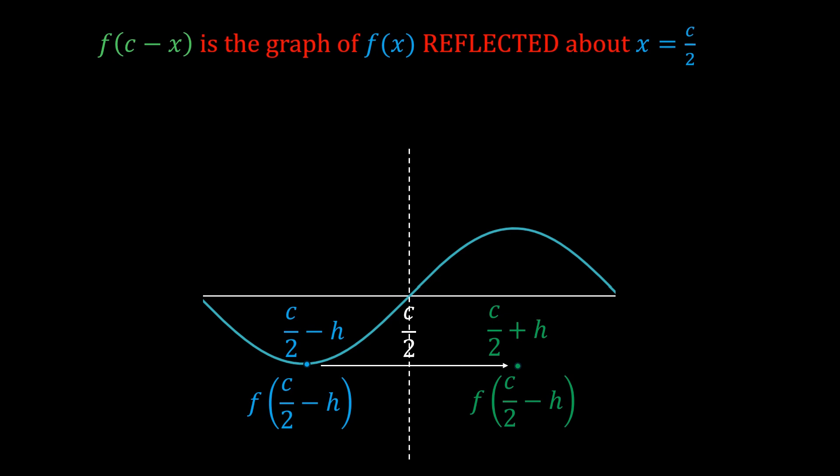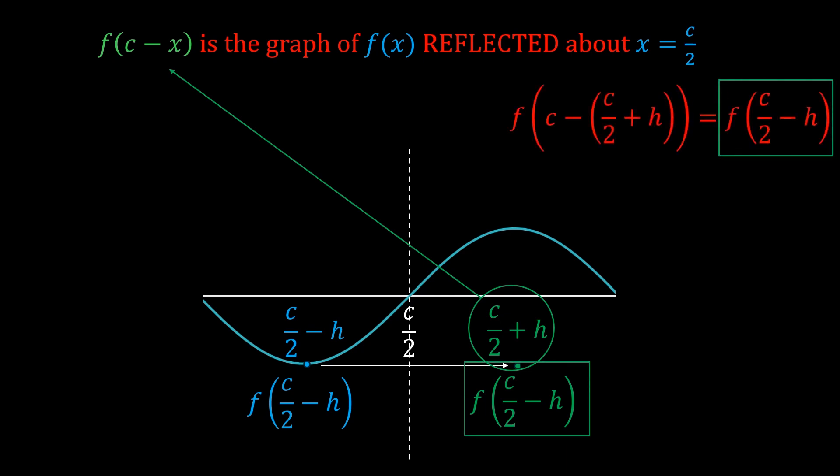And now you can check this point is on f(c-x) by plugging in the x-coordinate once again. And you see that the y-coordinate perfectly matches. So this green point is on f(c-x).